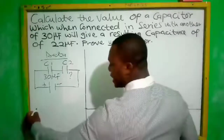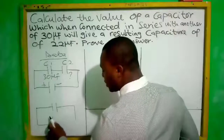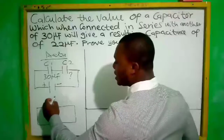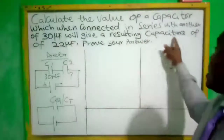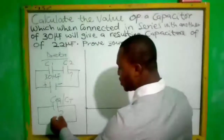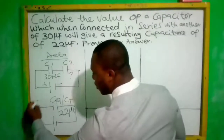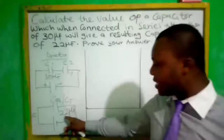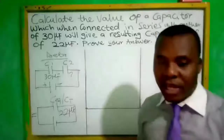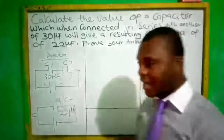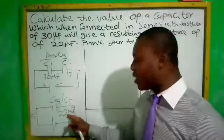C2 we don't know the value. Capacitance is the ability to store electric charge. The equivalent or C total — the resulting capacitance — is 22 microfarad. We have two ways to calculate this; I will use both ways and at the end we will arrive at the same answer. We will also prove our answer using the C2 we find.